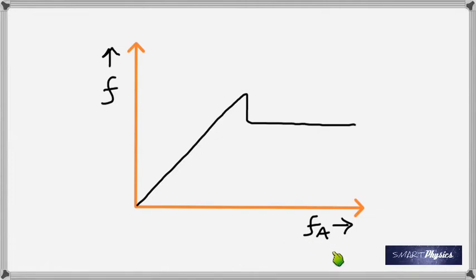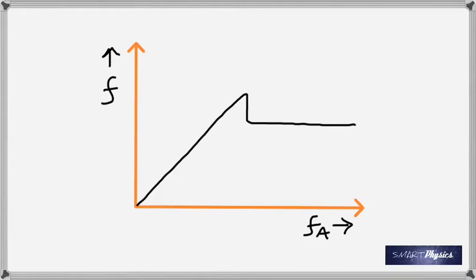When the applied force is zero, friction is zero. As I increase the applied force, friction also increases up to a maximum value of static friction — that maximum is called limiting friction. After the object begins moving, friction decreases, and this lower value is kinetic friction. So kinetic friction is always less than static friction.